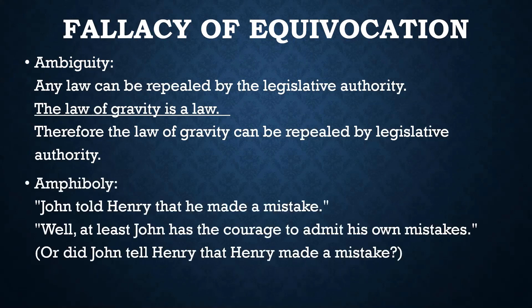It's possible that ambiguity extends over a larger range of words instead of just one single word. Somebody might say, 'John told Henry that he made a mistake.' That is ambiguous. Somebody might respond, 'Well, at least John has the courage to admit his own mistakes,' assuming that John told Henry that he — that is, John — made a mistake. But it could instead mean that John told Henry that Henry is the one who made a mistake. Without context especially, that is unclear.